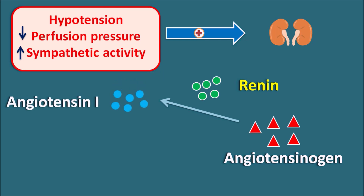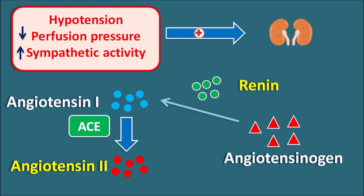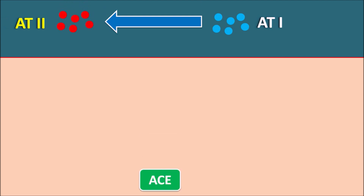But angiotensin 1 is not the main mediator to produce the physiological response. Angiotensin 1 is going to be converted into angiotensin 2, which is the potent vasoconstrictor. This reaction is mediated by the enzyme ACE — angiotensin converting enzyme — which is very important to derive angiotensin 2 from angiotensin 1.